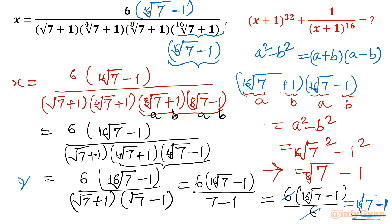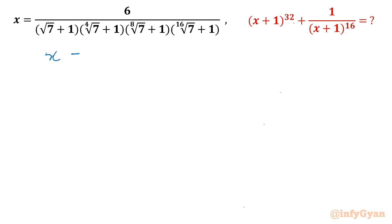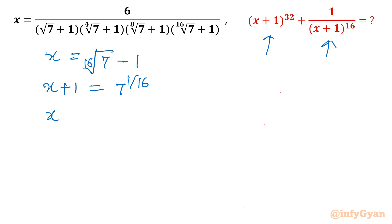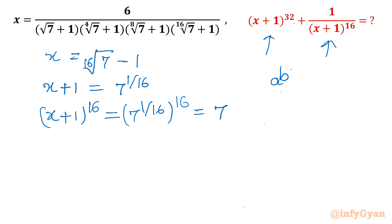So x = ¹⁶√7 − 1, which means x = 7^(1/16) − 1. Adding 1 to both sides: x + 1 = 7^(1/16). Now raising both sides to the power 16: (x+1)^16 = (7^(1/16))^16 = 7, using the exponent property a^(b·c) = (a^b)^c. So (x+1)^16 = 7.